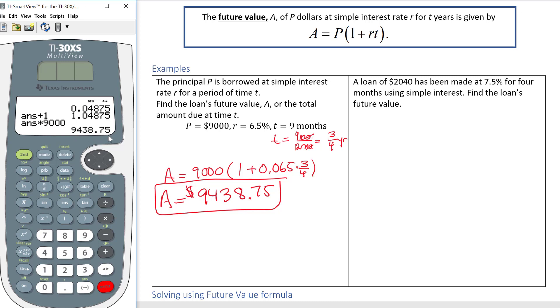So if you don't have a calculator that you can see the screen, you're going to have to type it in that way. Do the three-fourths, then multiply by the rate, then add the 1, hit enter every single time, and then multiply by the 9,000.